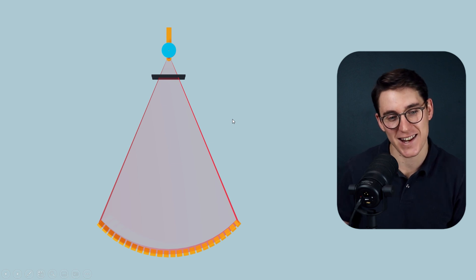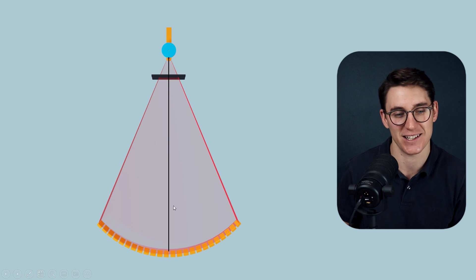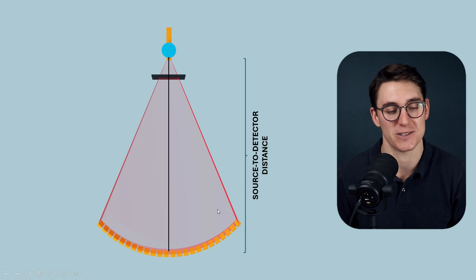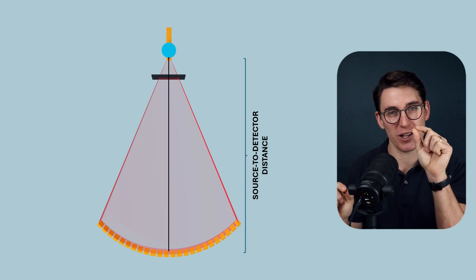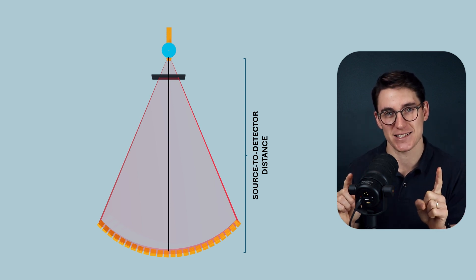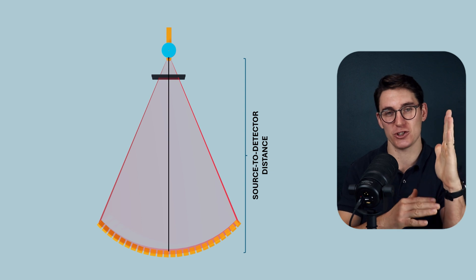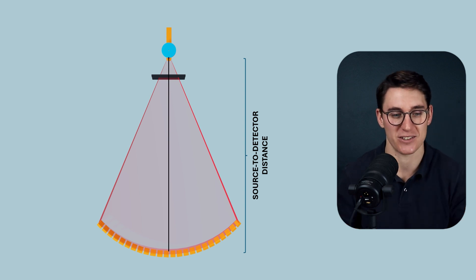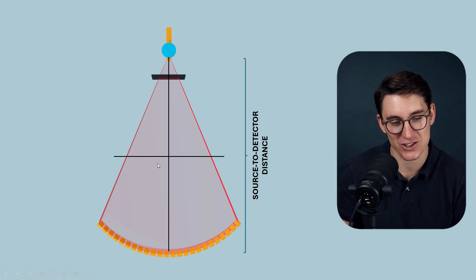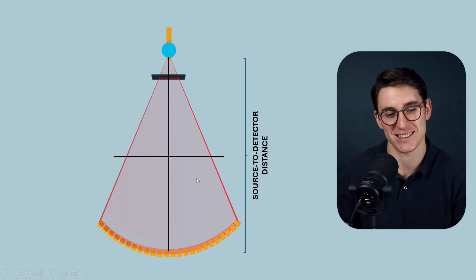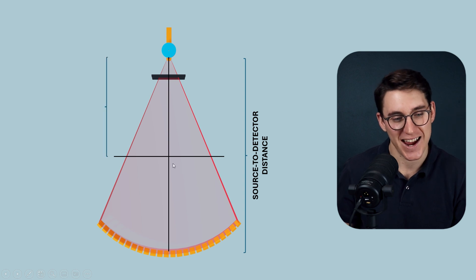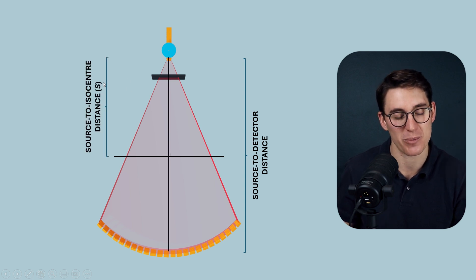We can draw a line connecting the anode directly to the detectors that bisects the fan angle — down the middle of our beam. This is what's known as the source to detector distance, and we can actually calculate this distance. When a third generation CT scanner rotates, there is a point that is the center of that rotational axis — that point doesn't move. Generally in a 512 by 512 pixel array, that point is the isocenter, representing the pixel at 256 by 256 in the x-y coordinates. The distance from the source to the isocenter can be represented by the letter S.